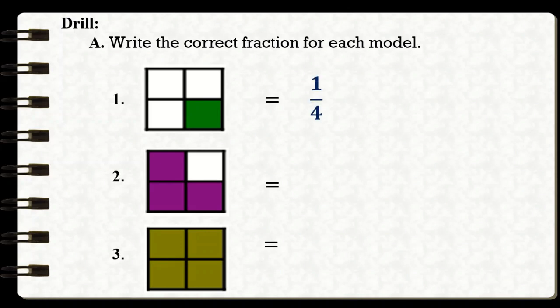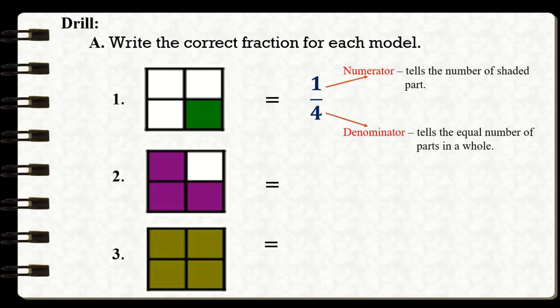For number one, the fraction is equal to one-fourth. One is our numerator — it tells us the number of shaded parts — while four is the denominator, which tells us the equal number of parts in a whole. For number two, that's equal to three-fourths, meaning there are three shaded parts and four total parts in a whole.